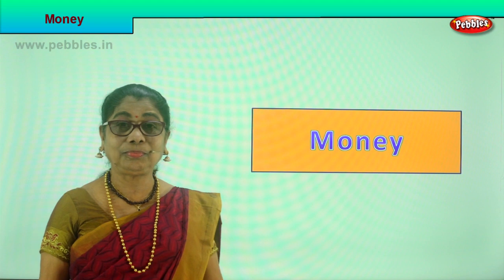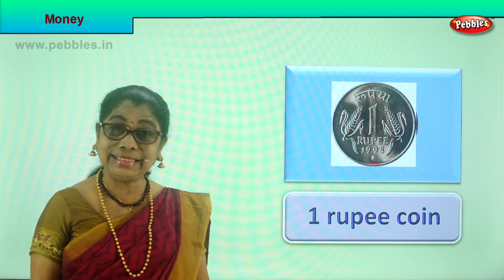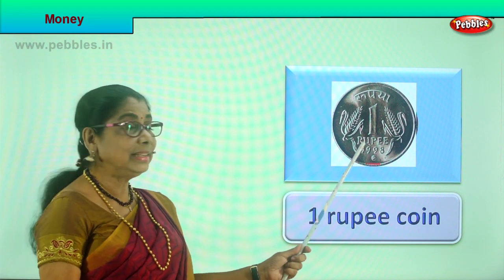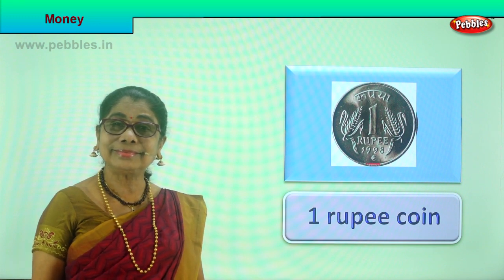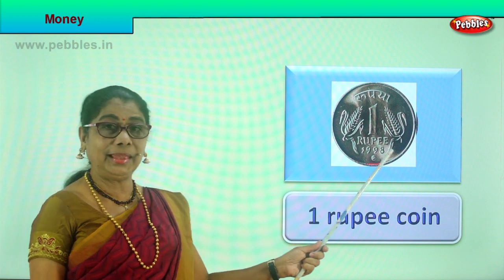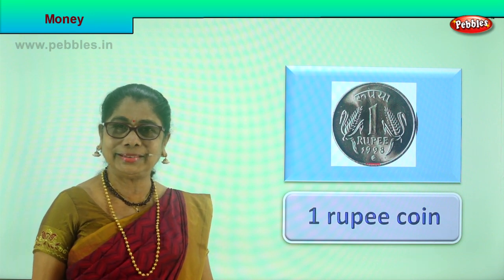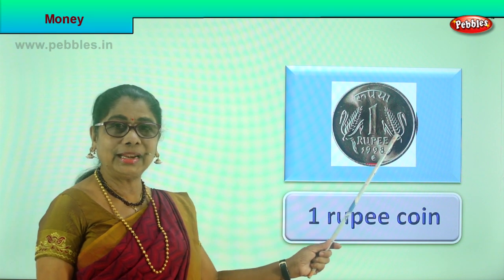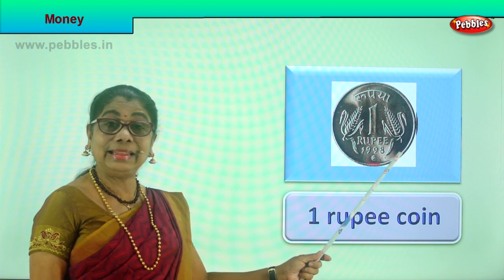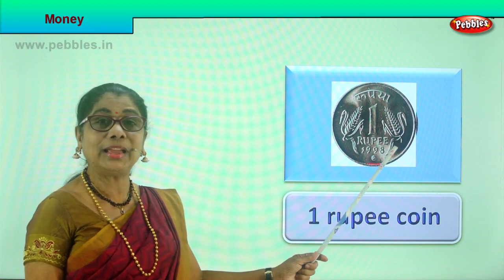Now look what we have. You can ask daddy to show you the coins and the paper money that we use today. What is this? Have you seen this? Ask mommy for a coin, turn both sides and look — it says 'one rupee'. This is a one rupee coin. It's a small, silver-colored coin. It is the least denomination in Indian currency — the one rupee coin.